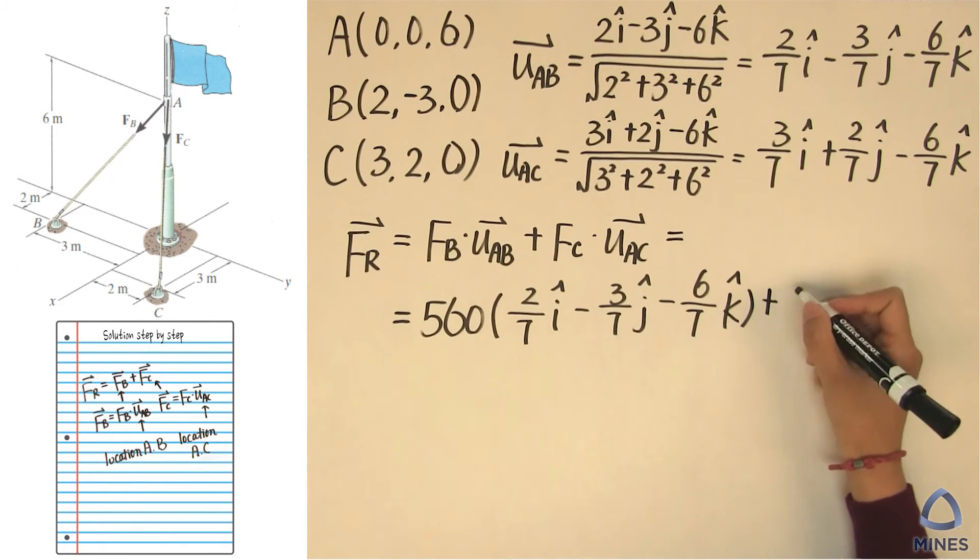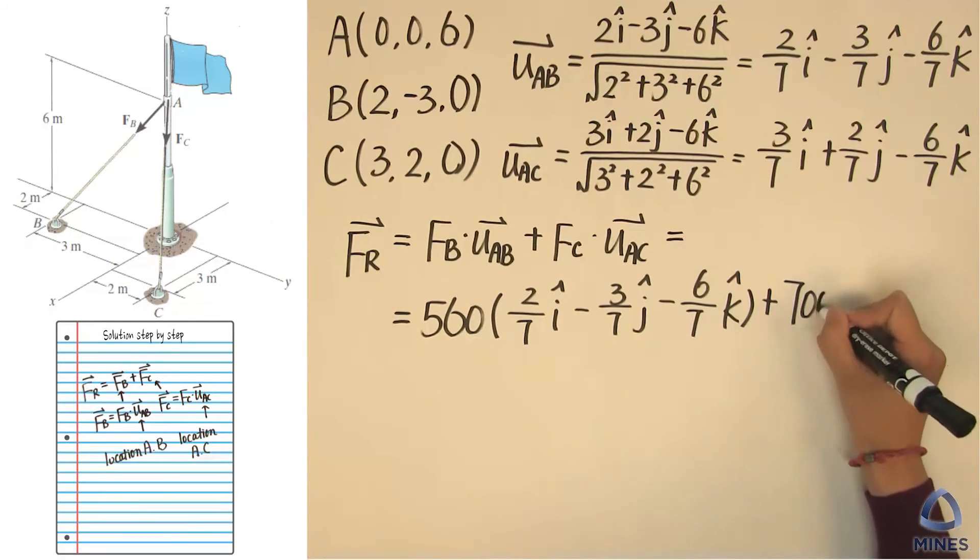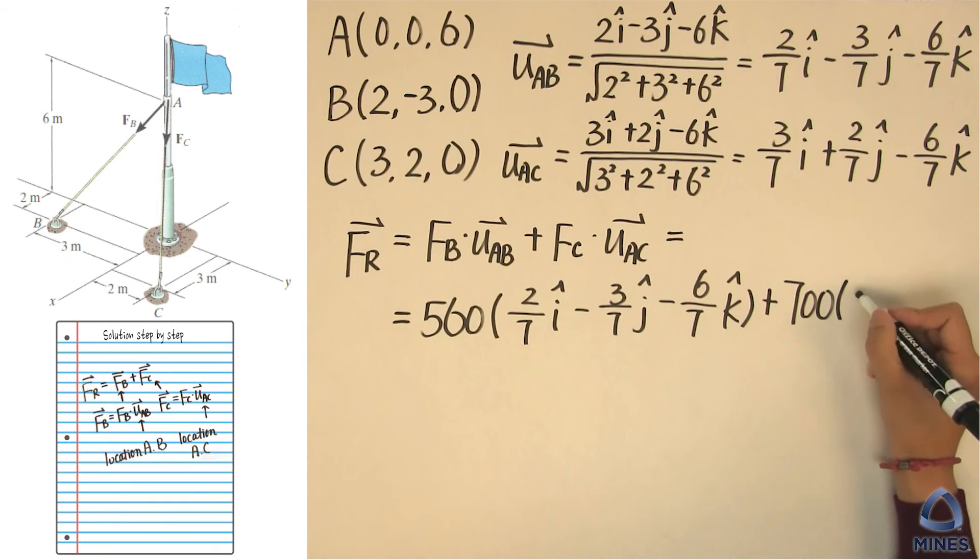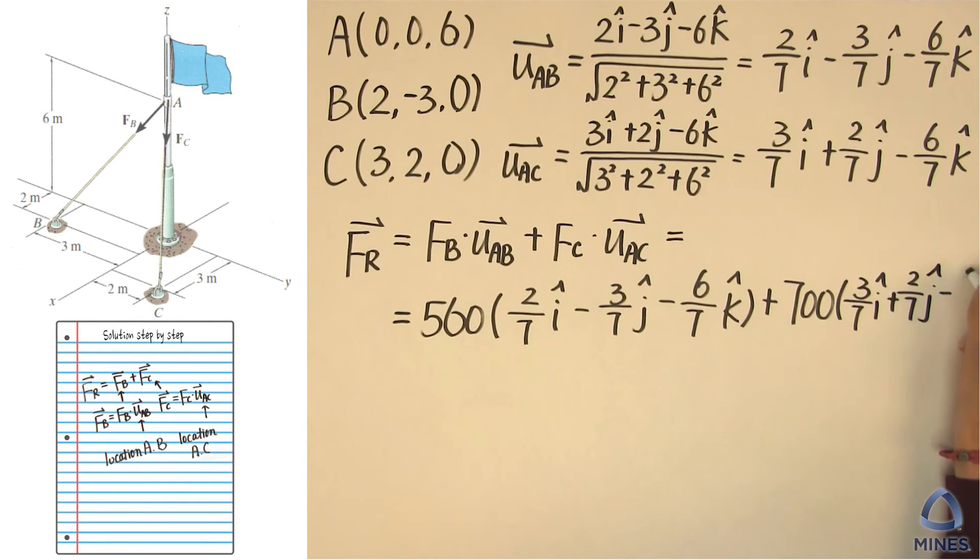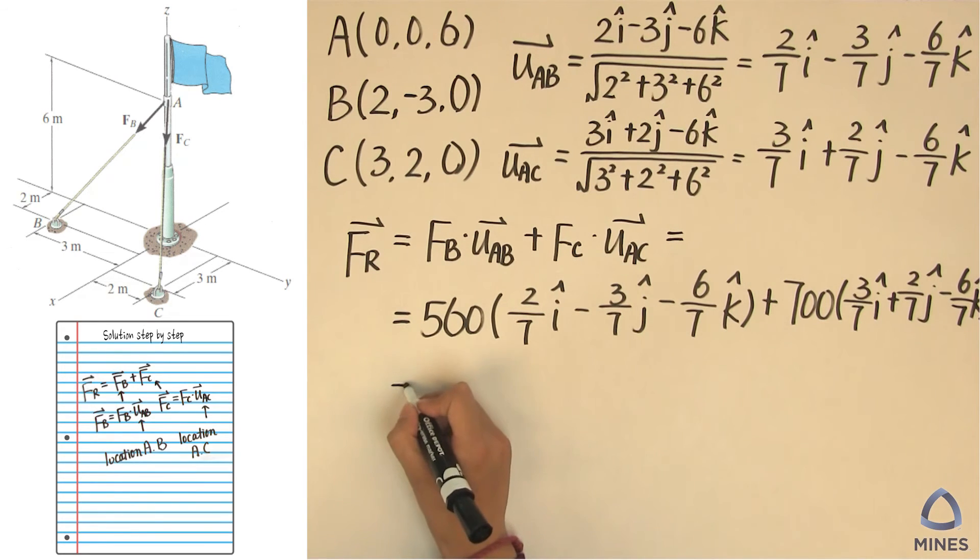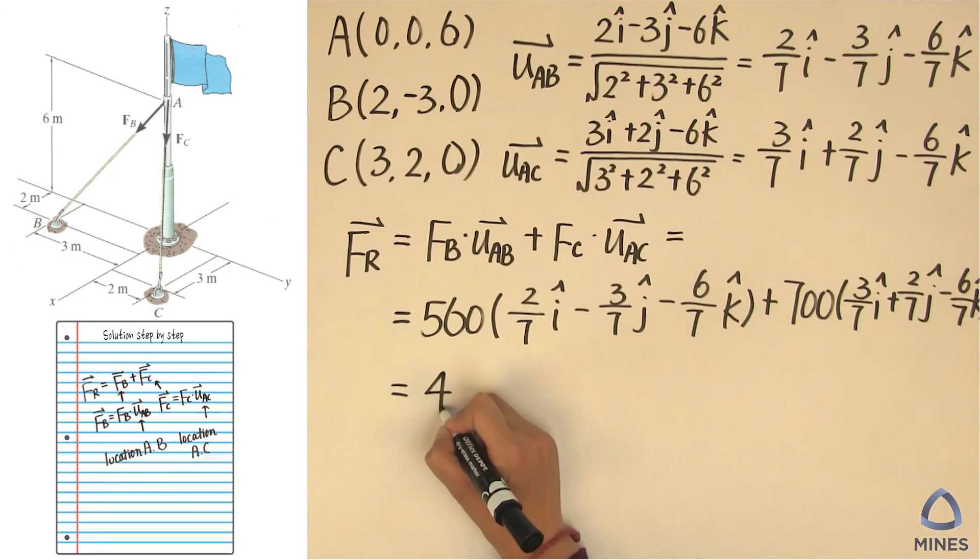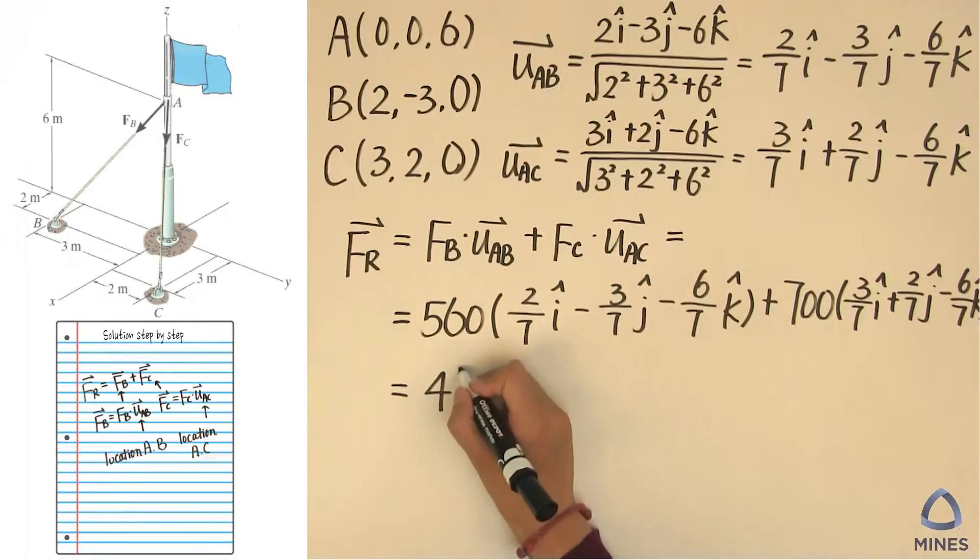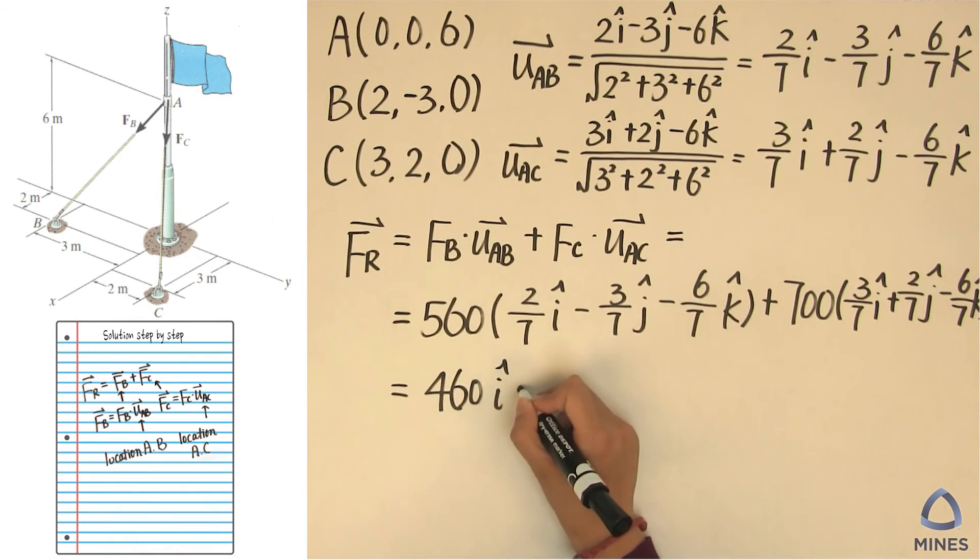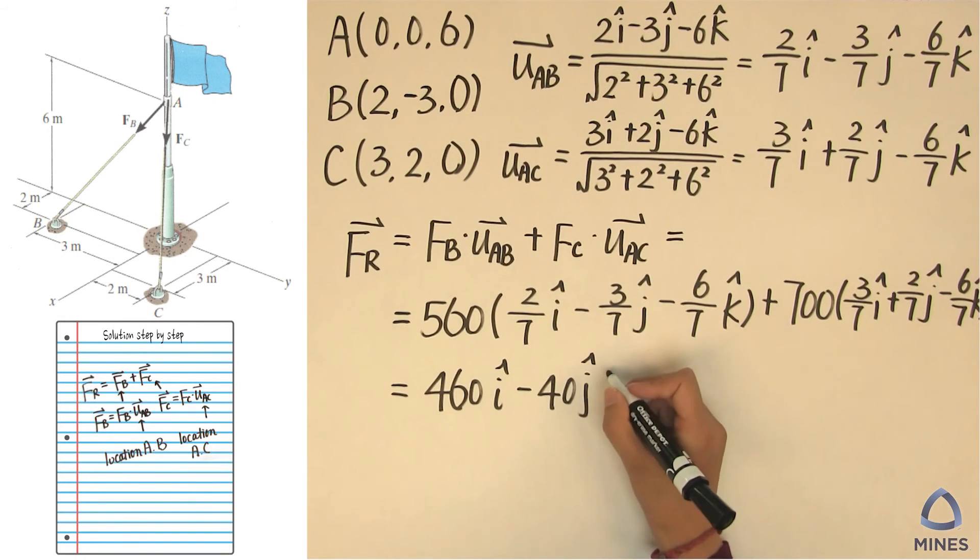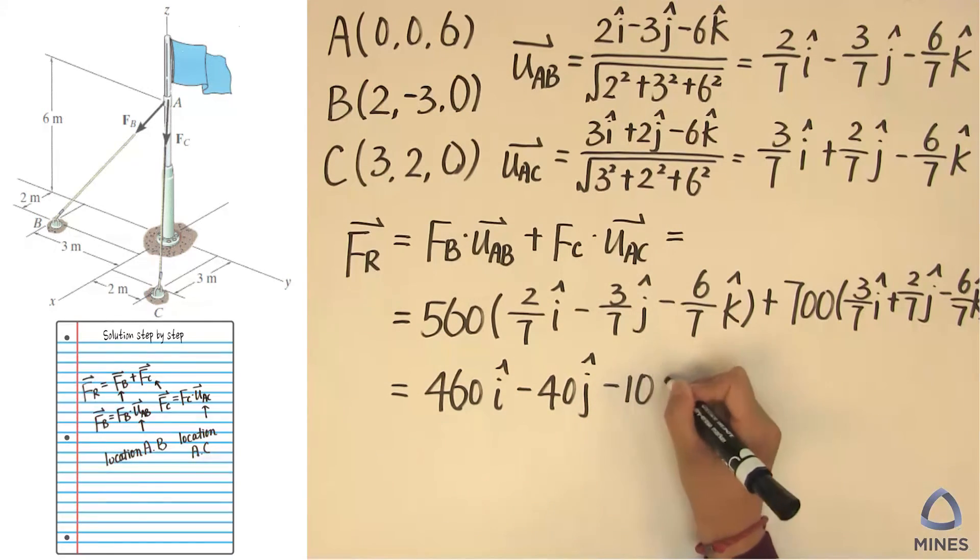Plus, FC will be 700. So you just do your calculation as carefully as possible. Finally, you have a vector form for your total resultant force.